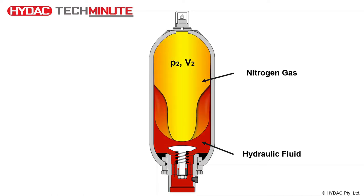As the system pressure increases, the bladder and nitrogen gas continue to compress, which results in more hydraulic fluid being present in the accumulator. At this point the accumulator is storing hydraulic fluid at the maximum system operating pressure, P2. If the hydraulic pressure in the system drops, the bladder will expand, forcing hydraulic fluid from the accumulator back into the system.